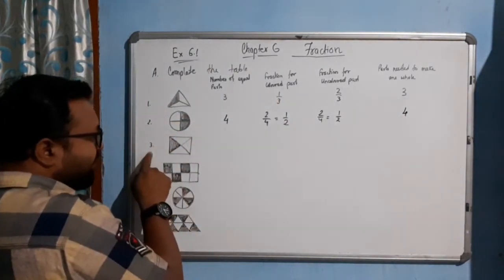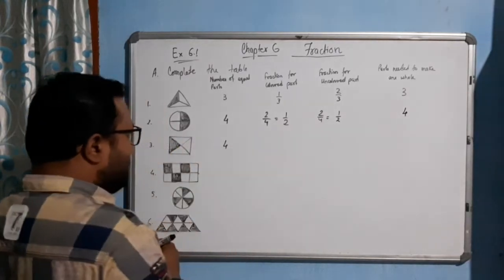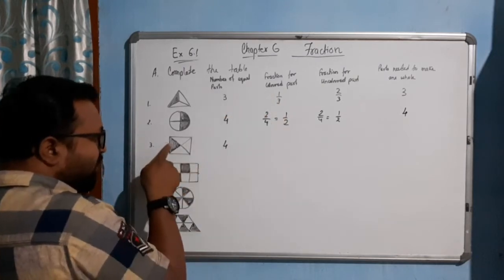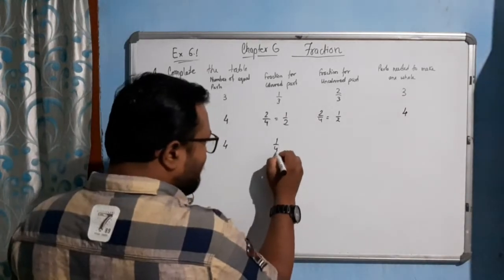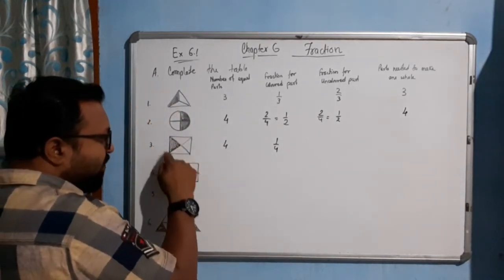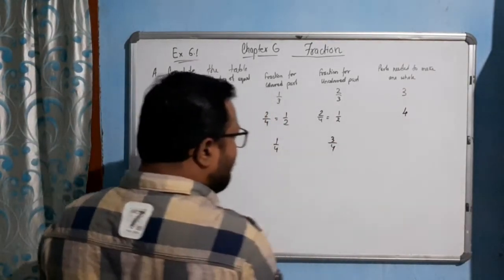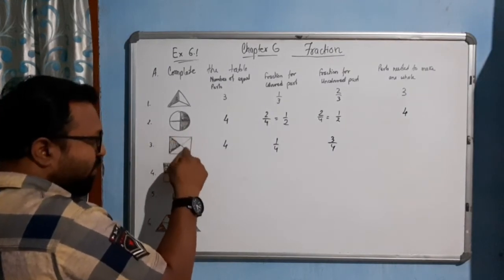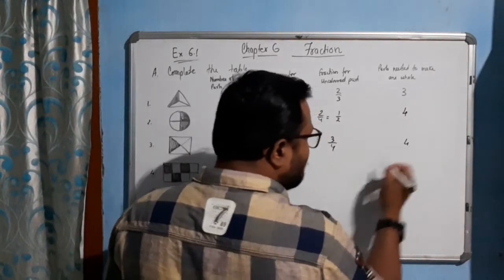Now come to picture 3. How many parts? 1, 2, 3, 4 — 4 parts are there. What is the fraction of colored part? Only one part is colored, so 1 out of 4, that is 1/4. What is the fraction of uncolored part? 3 parts are not colored out of 4 parts, so 3/4. How many parts are required to make a whole? All 4 parts — if I shade them it will become a whole, so 4.